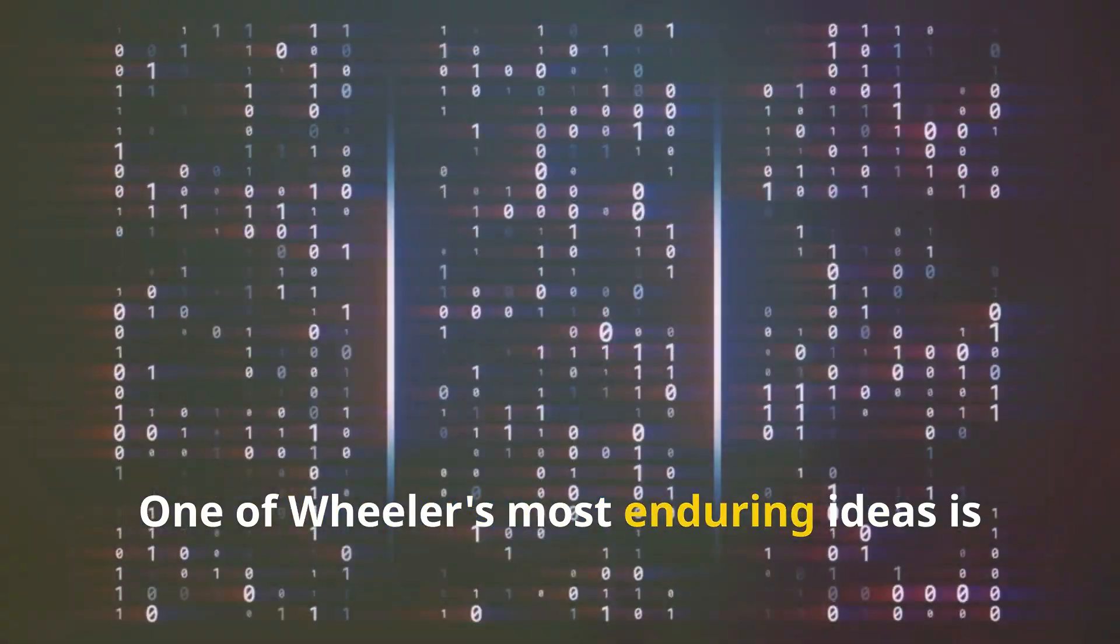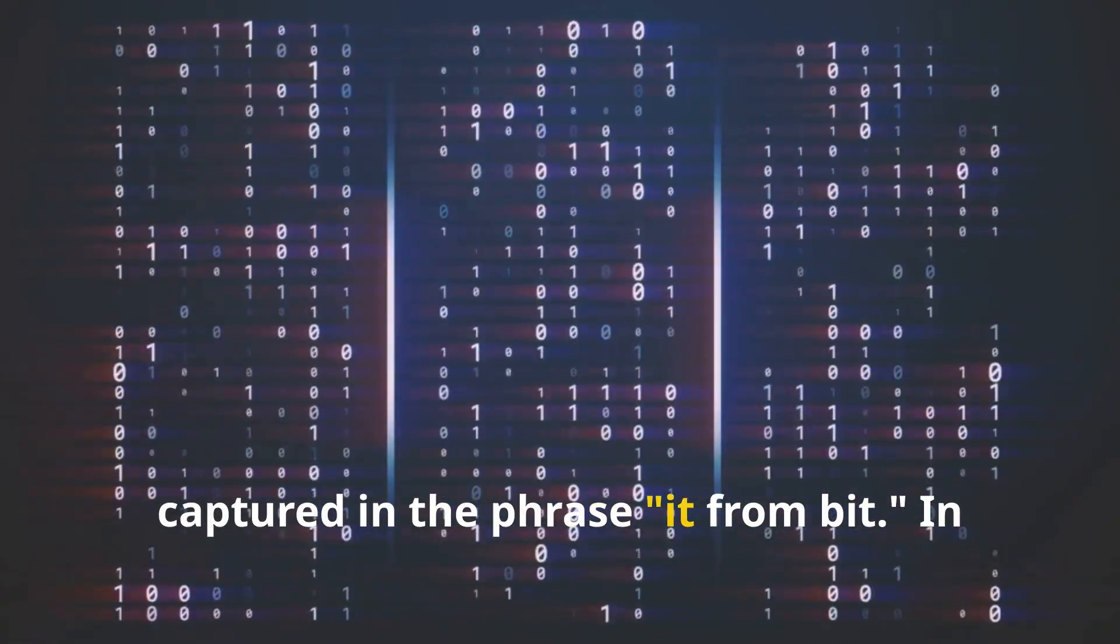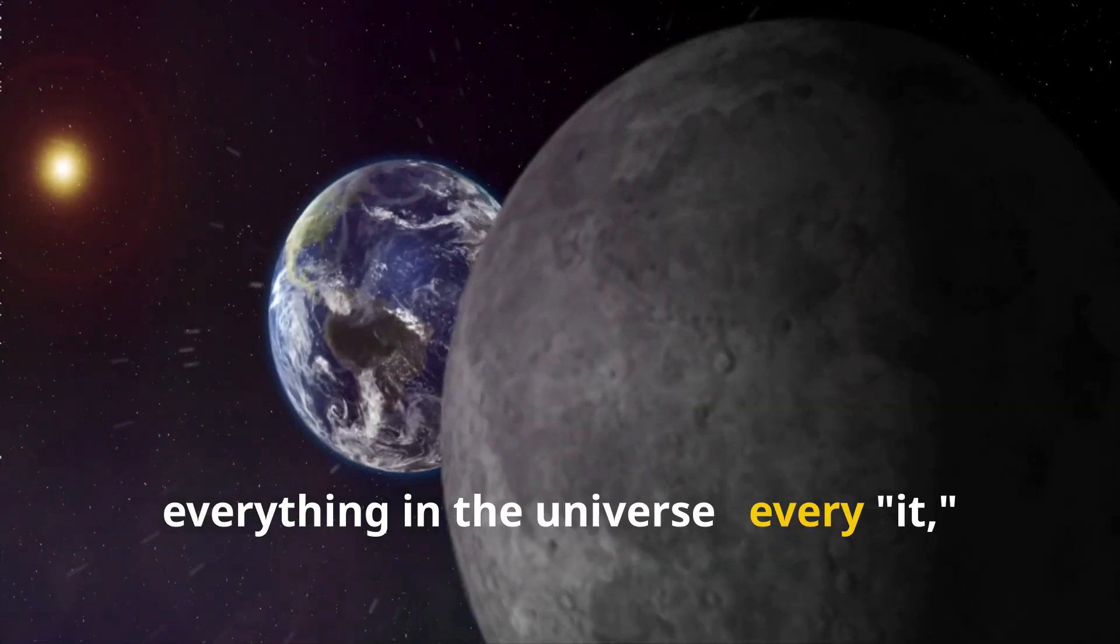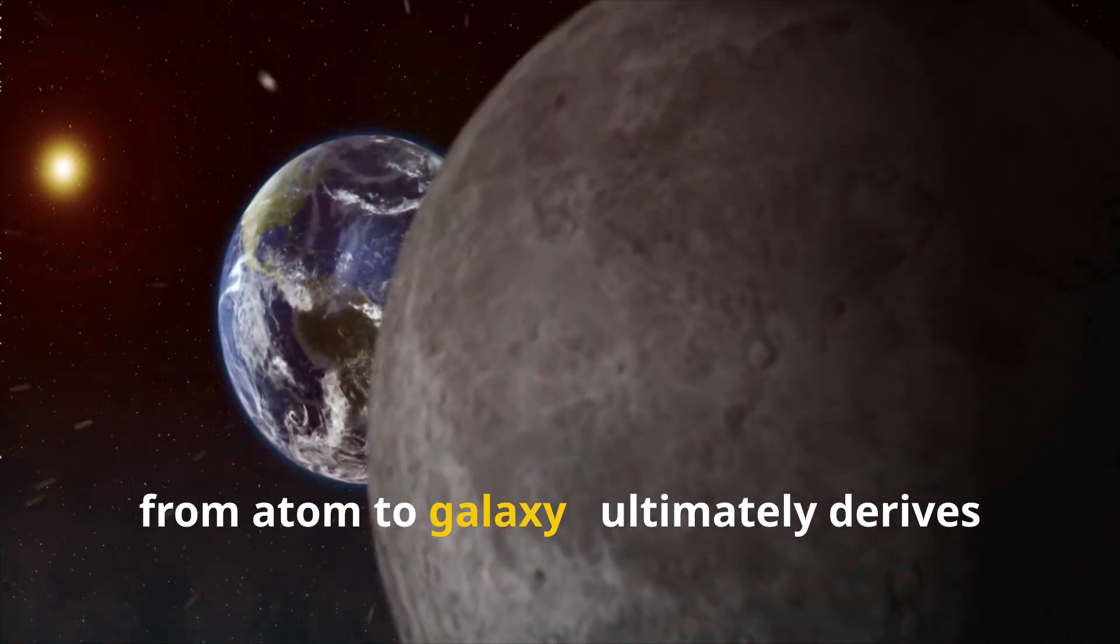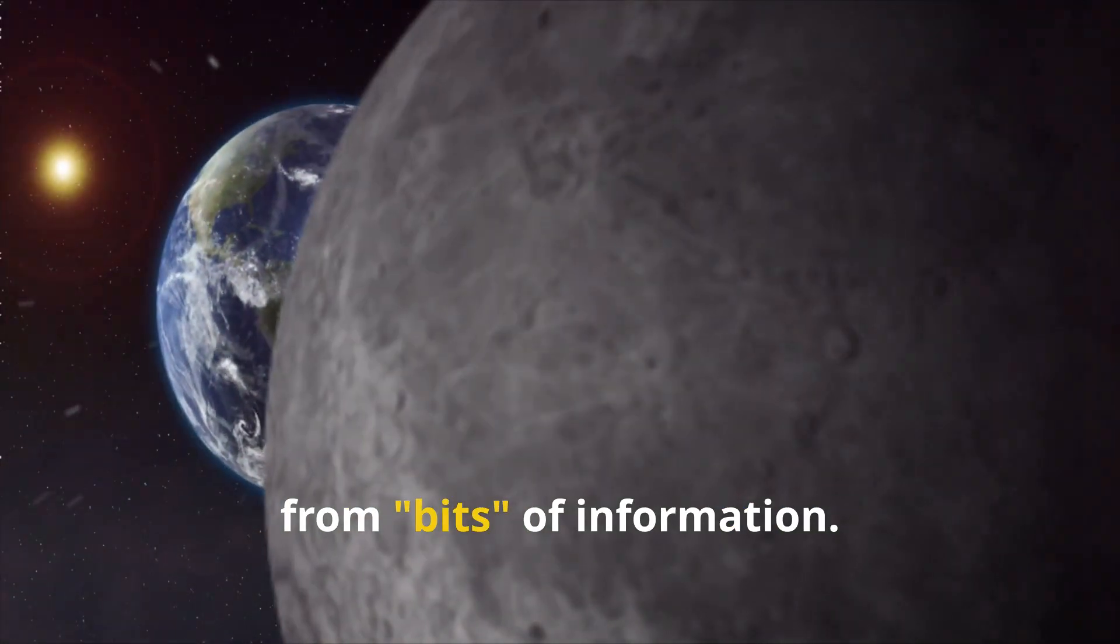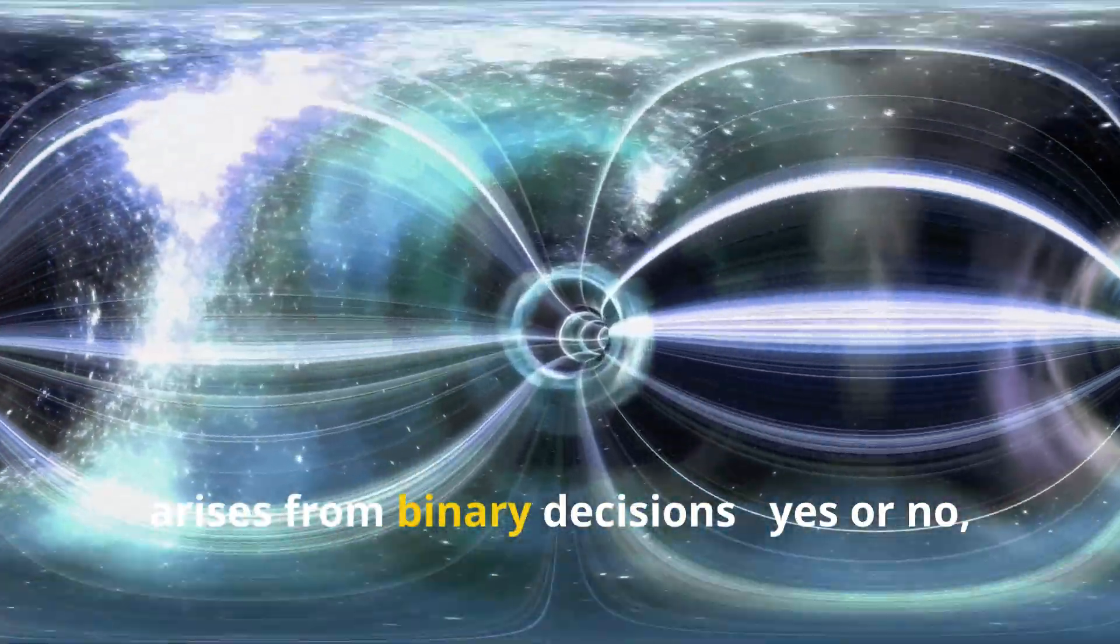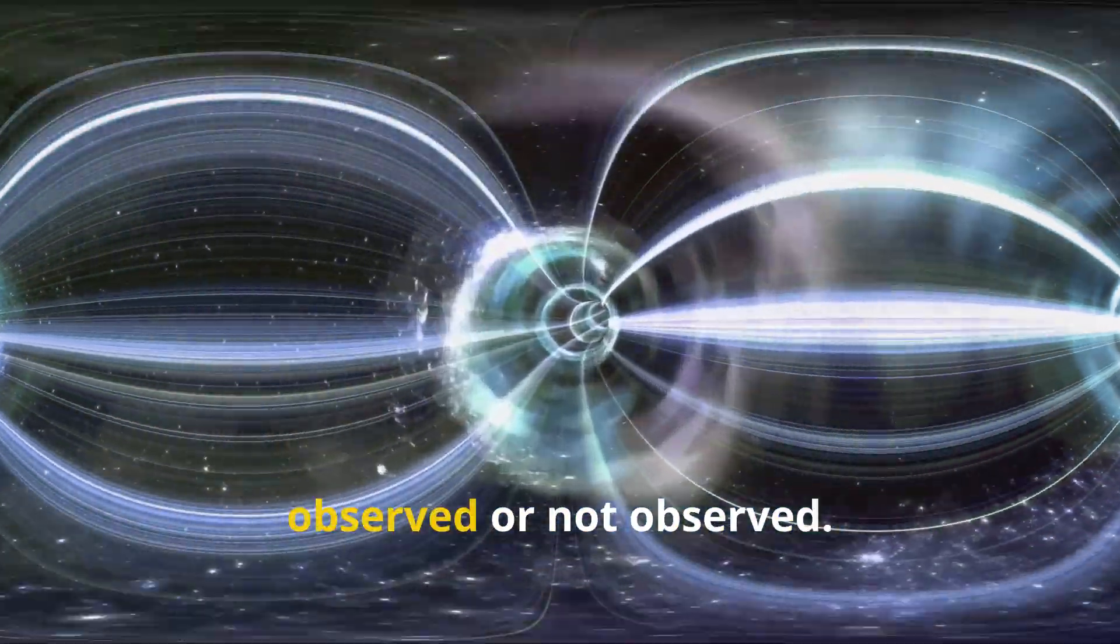One of Wheeler's most enduring ideas is captured in the phrase, it from bit. In his view, everything in the universe, every it from atom to galaxy, ultimately derives from bits of information. Not information as we use in language or computers, but something more primal. Wheeler believed that physical reality arises from binary decisions, yes or no, observed or not observed.